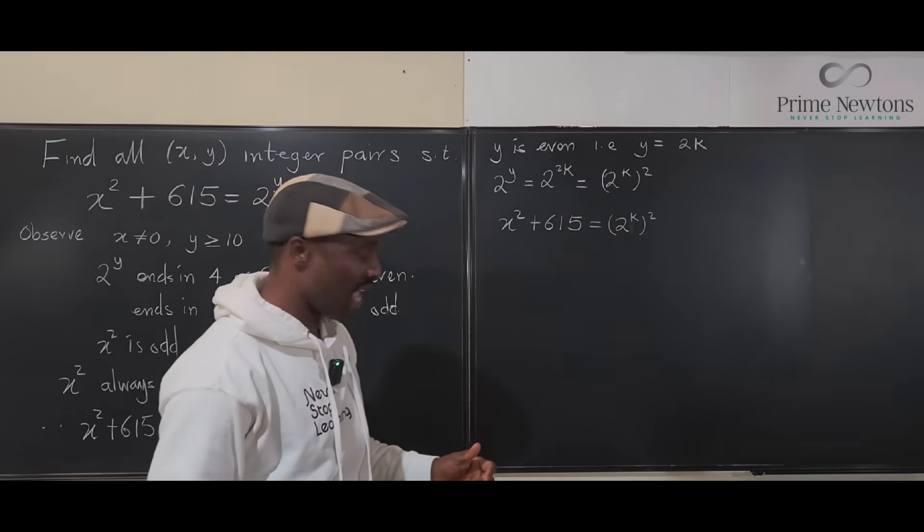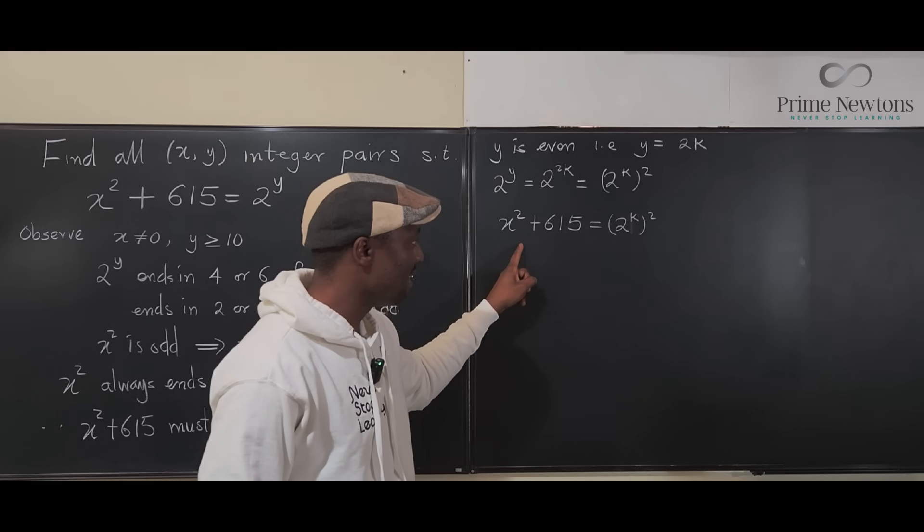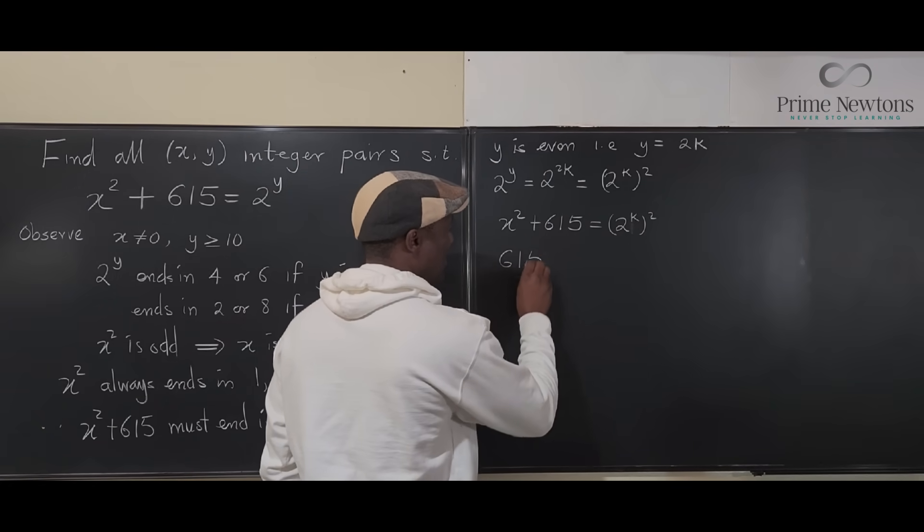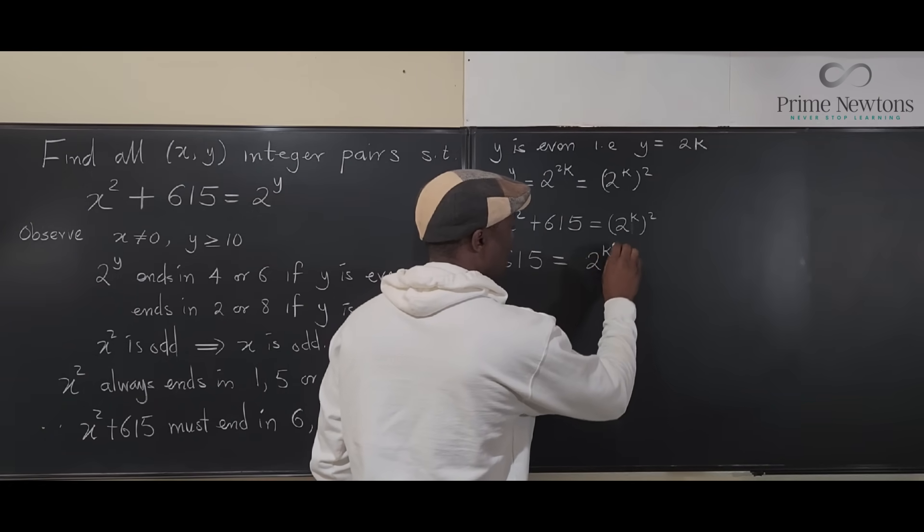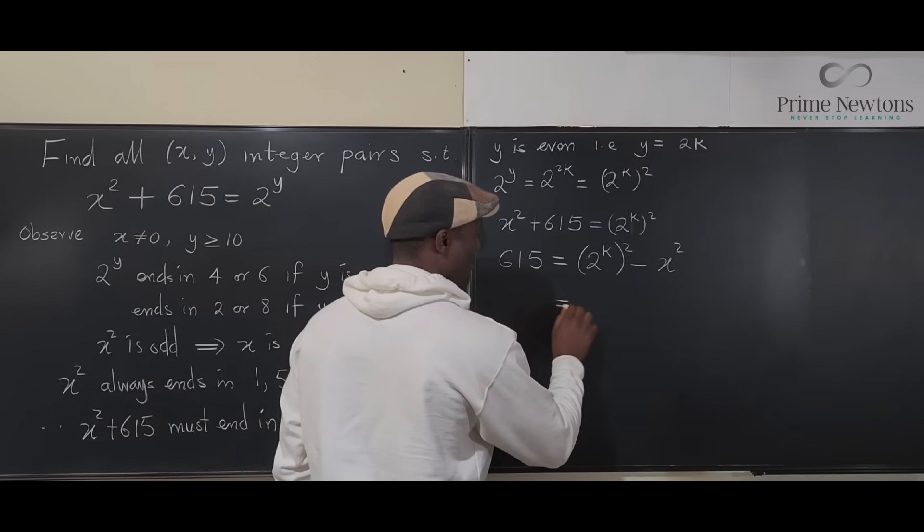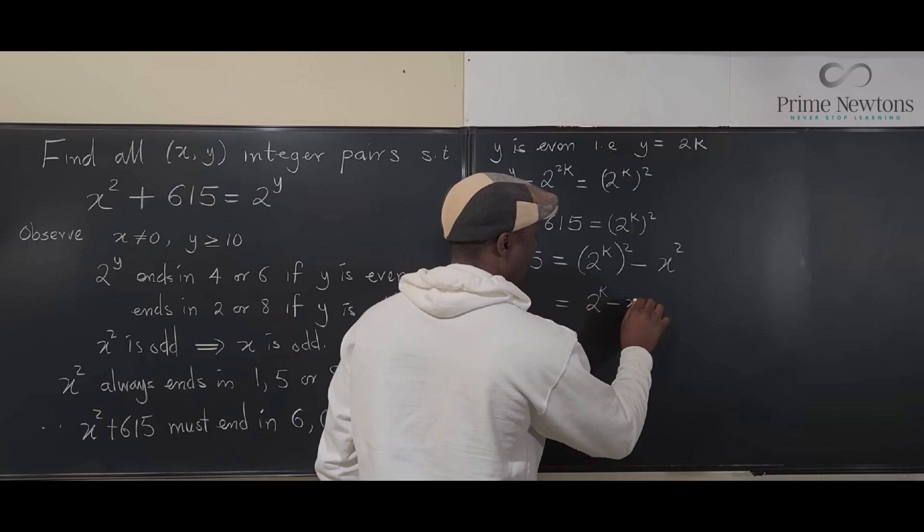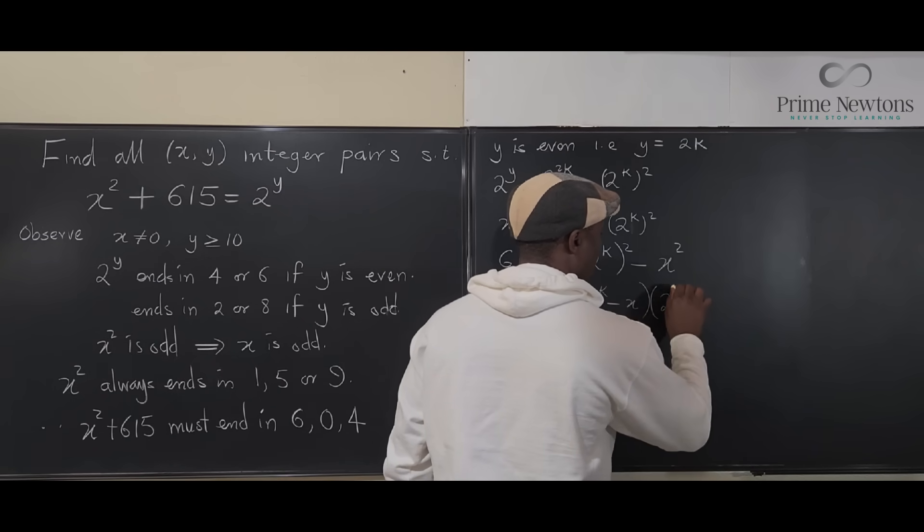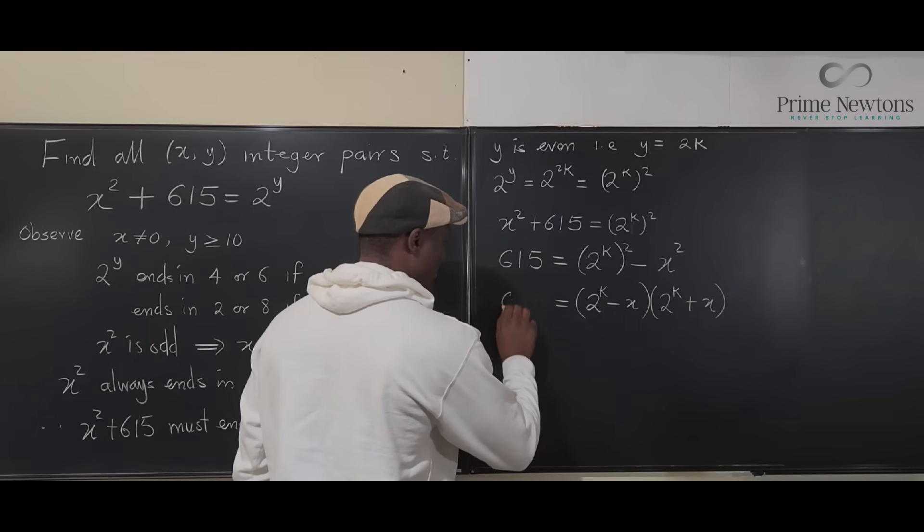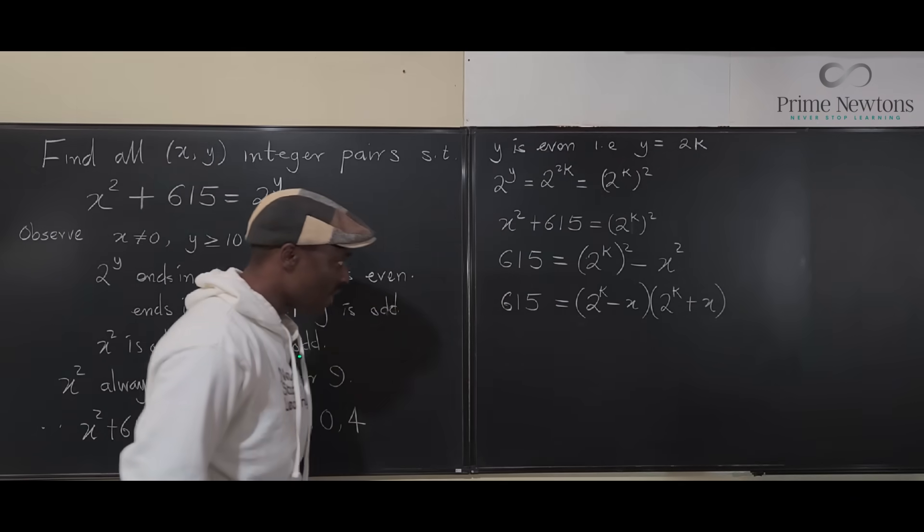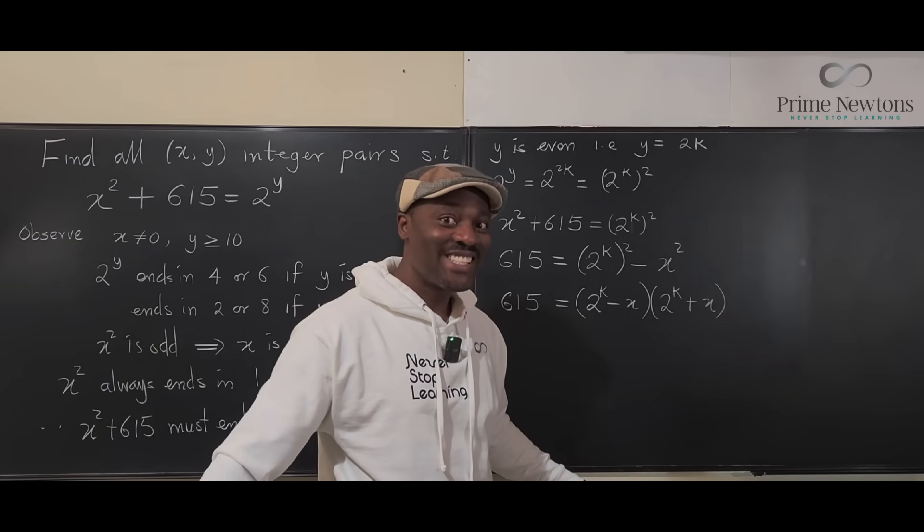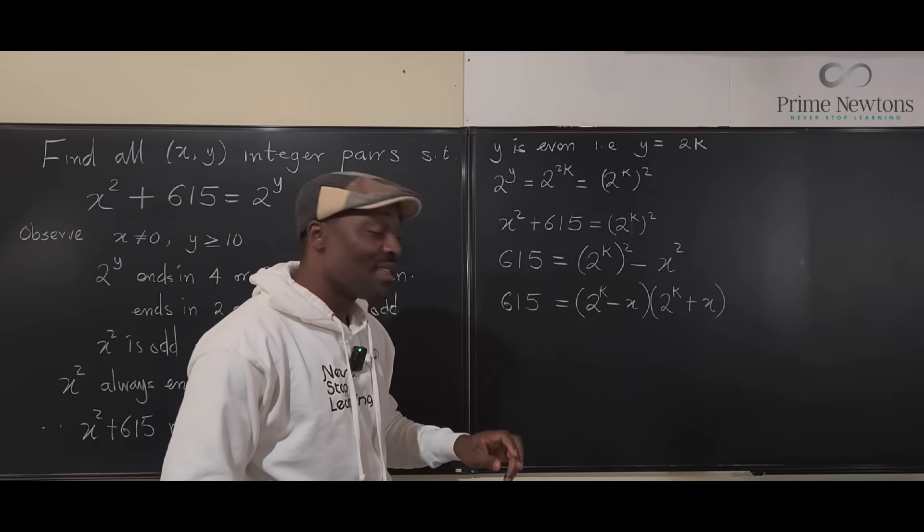So, this equation is x² plus 615 equals 2 to the k squared. So, if I want to do difference of two squares, actually, I can't move this guy here. I'll have to move this guy here and leave the 615 here. So, I know that 615 equals 2 to the k squared minus x², which by factoring will be (2^k - x)(2^k + x). Nice. And that's 615.